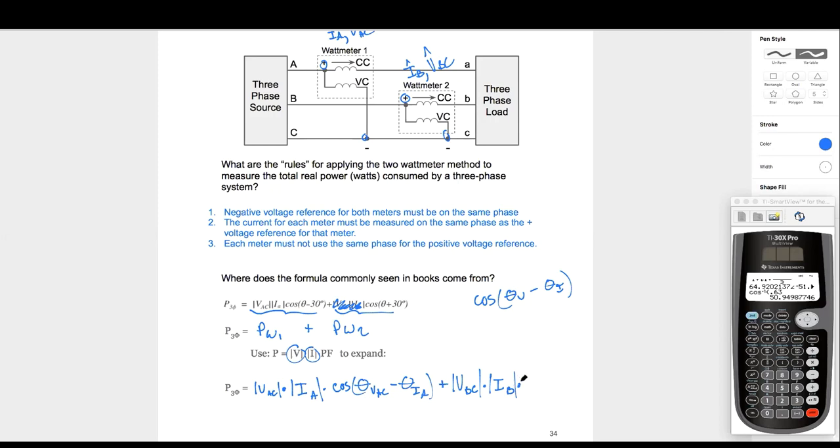Here comes that tricky cosine part. We've got a theta V minus a theta I. Well, what's our theta V? How about VBC, right? VBC and the angle of our B line current. That's step number one.